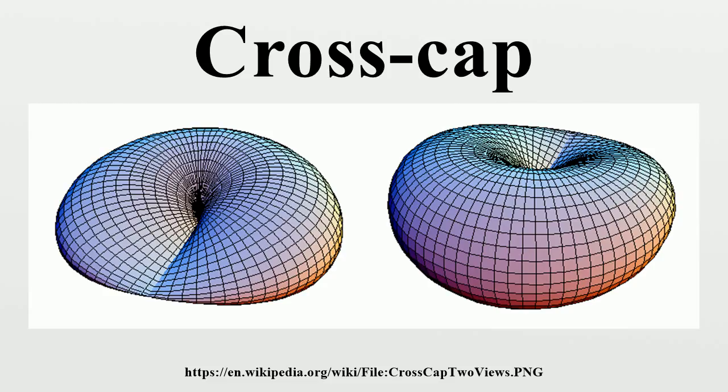But there are only two points in the image where the image cannot be that of an immersion. The bounding edge of a cross-cap is a simple closed loop. Like certain versions of the Mobius strip, it may take the form of a symmetrical circle.